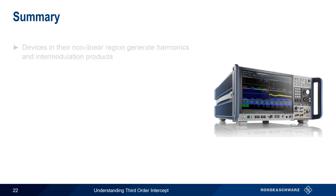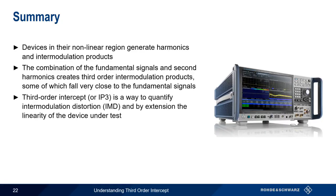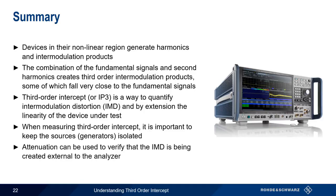In conclusion, devices being operated in their nonlinear region will generate both harmonics and intermodulation products. The combination of the fundamental signals and second harmonics creates third order products, some of which fall very close to the fundamentals and are therefore difficult to suppress or filter out. Third order intercept, also called IP3, is the standard way of quantifying the level of intermodulation distortion and, by extension, the linearity of the device under test. Source isolation is needed for ensuring valid measurement results, and attenuation can be used to verify that IMD is not being created within the analyzer itself. This concludes our presentation, Understanding Third Order Intercept.